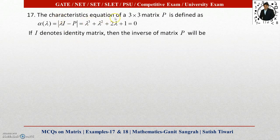Example number 17: The characteristic equation of a 3 by 3 matrix P is defined as α(λ) = |λI - P| = λ³ + λ² + 2λ + I = 0. If I denotes the identity matrix, then the inverse of matrix P will be given by four options.